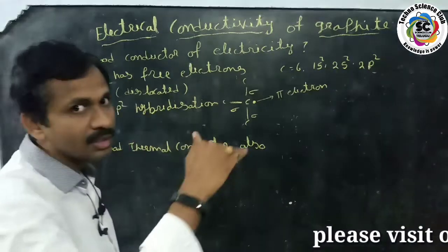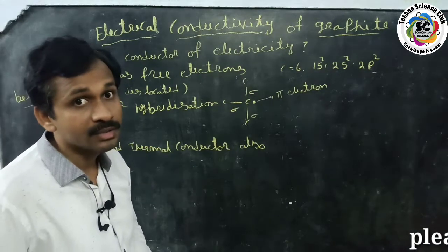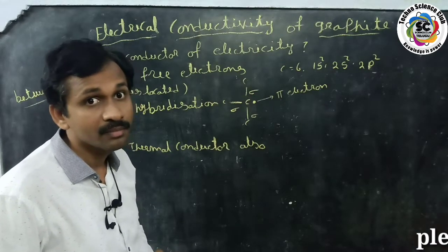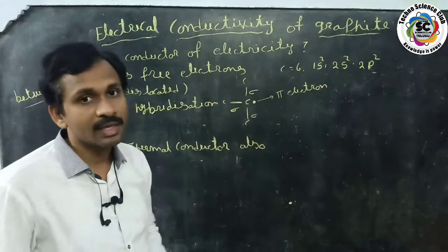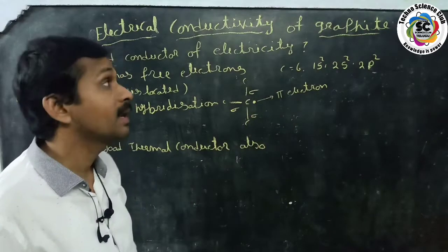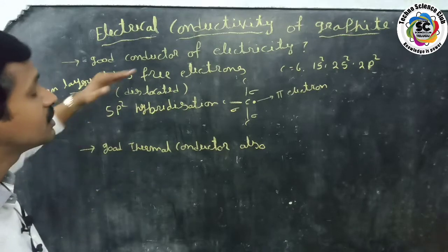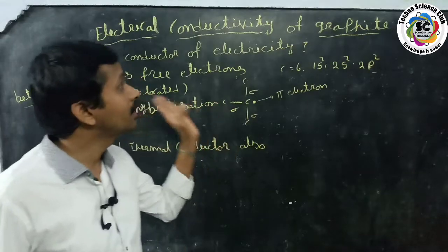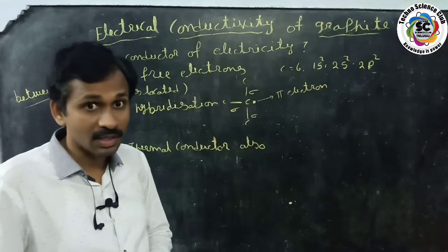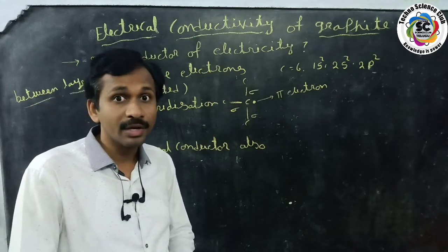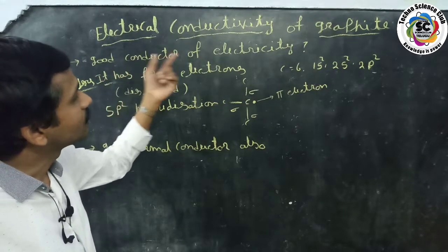In graphite, the carbon atoms undergo sp² hybridization. Because of the layer-like structure, the bonds between the layers are very weak. Each carbon has three sigma bonds and one pi electron. These pi electrons behave as free or delocalized electrons between the layers. Because of these free electrons, graphite is electrically conductive — this is the reason why graphite conducts electricity even though it is a non-metal.